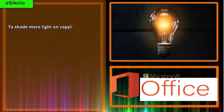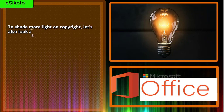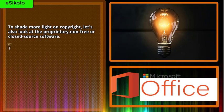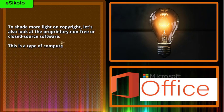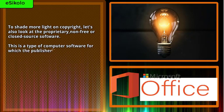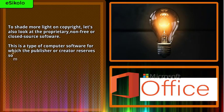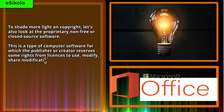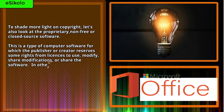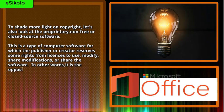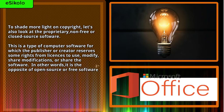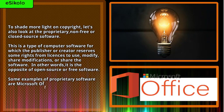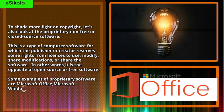To shed more light on copyright, let's also look at proprietary, non-free, or closed source software. This is a type of computer software for which the publisher or creator reserves some rights from licenses to use, modify, share modifications, or share the software. In other words, it is the opposite of open source or free software. Some examples of proprietary software are Microsoft Office, Microsoft Windows, Adobe Photoshop, and macOS.